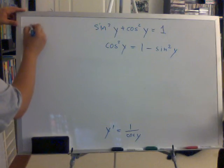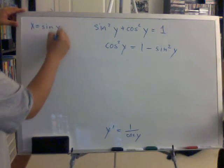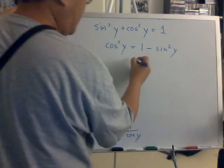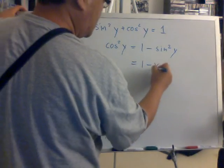But if you remember previously, you know that x equals sine of y. So you have cosine squared of y equals 1 minus x squared.